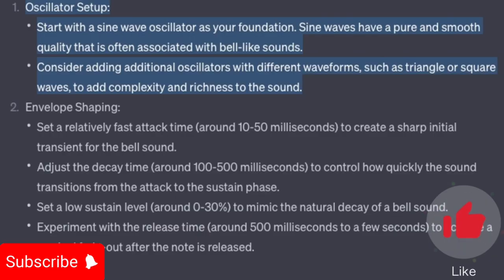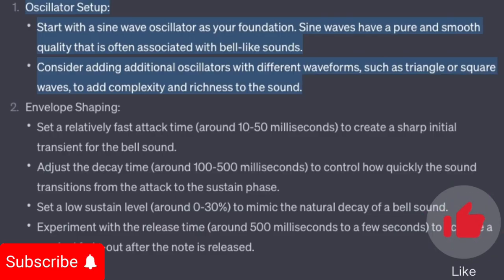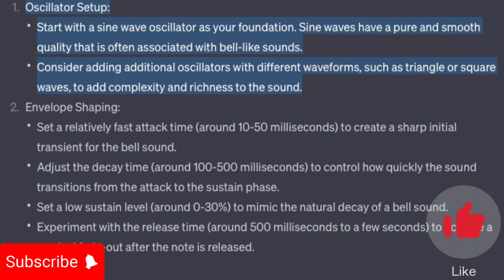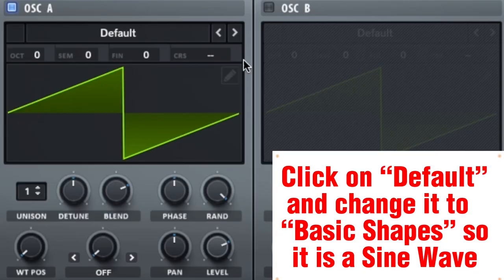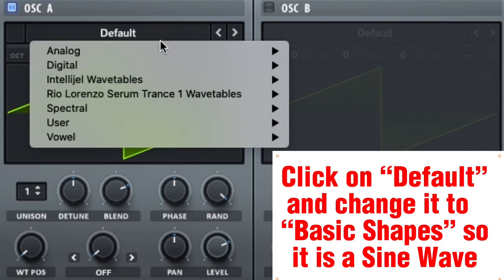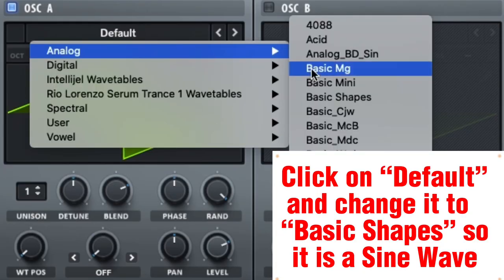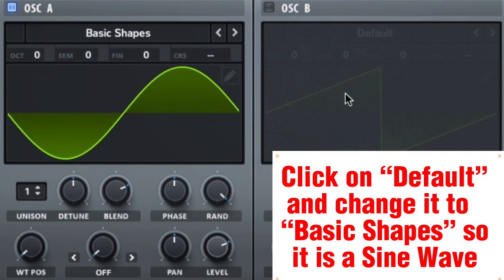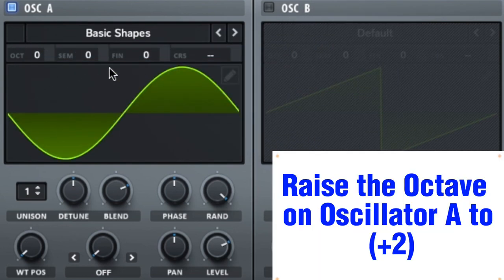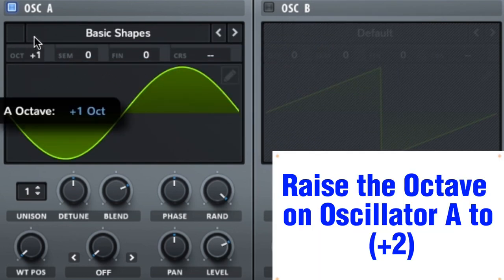Oscillator setup. Start with a sine wave oscillator as your foundation. Sine waves have a pure and smooth quality that is often associated with bell-like sounds. Click on default and change it to basic shapes so it is a sine wave. Raise the octave on oscillator A to plus 2.